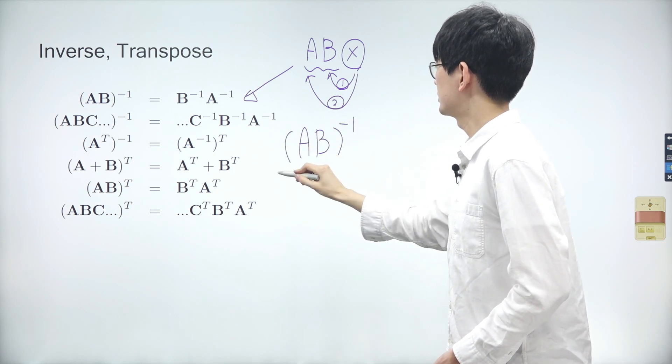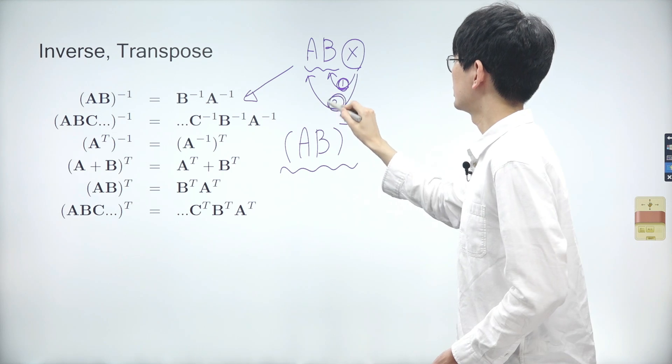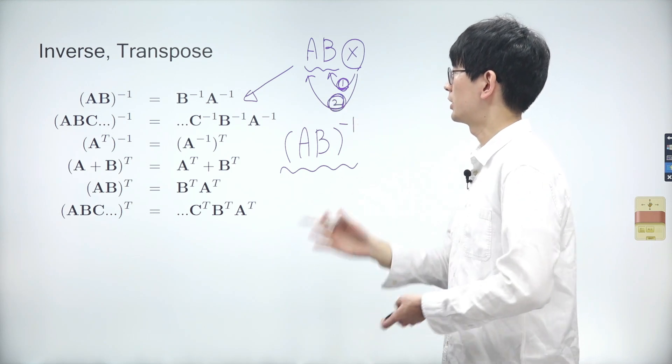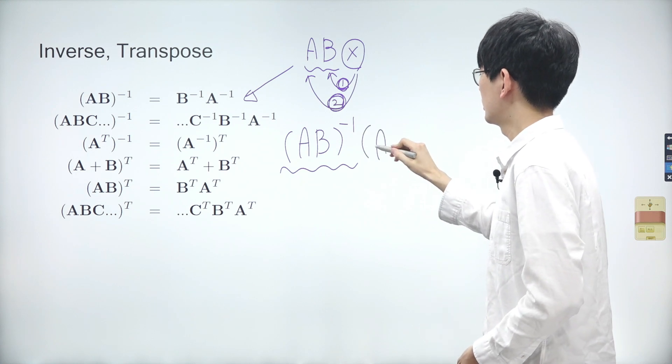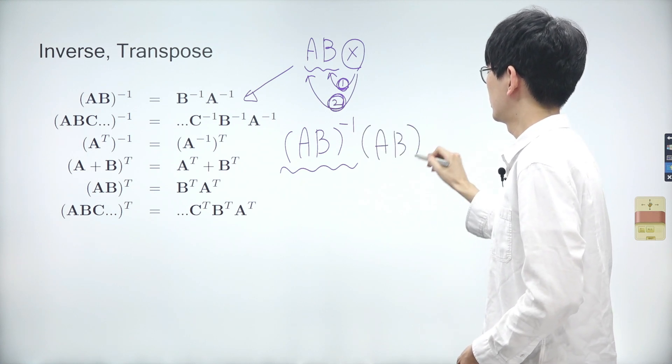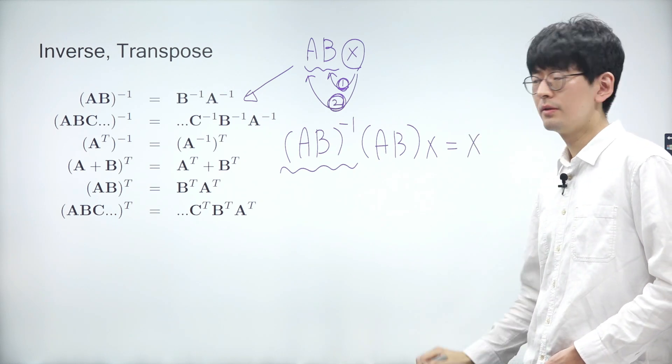Now, what is the inverse of AB? The inverse of AB reverses the transformation applied by AB. The product of AB and ABX is simply X, right?